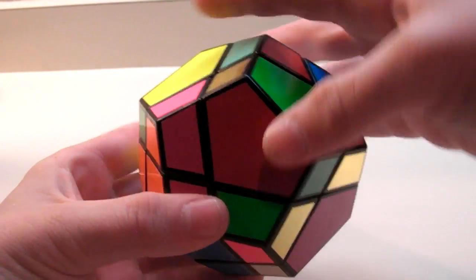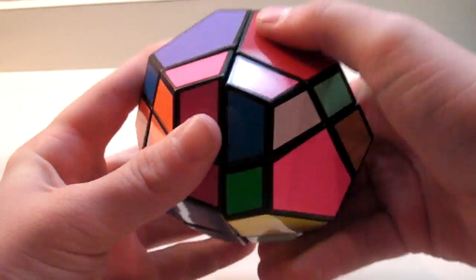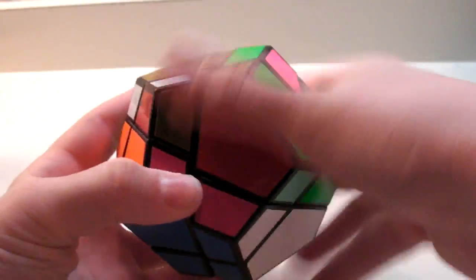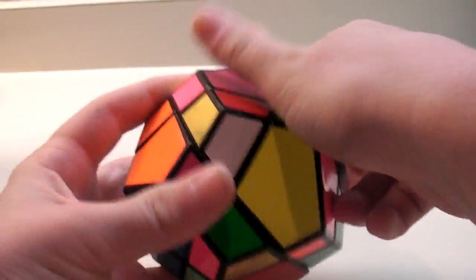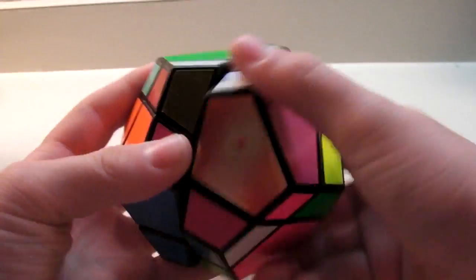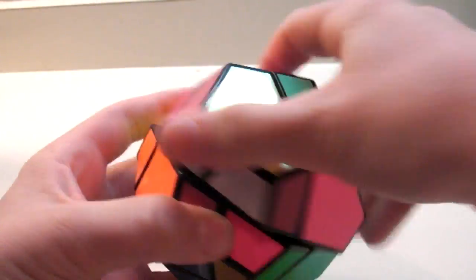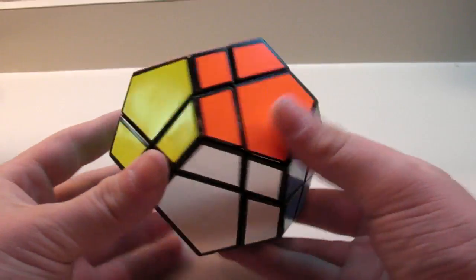And then doing R prime, L, R, L prime. It's the same thing, just holding it different. Two, three, four, five, and this is six. And there you have solved your Skewb Ultimate.